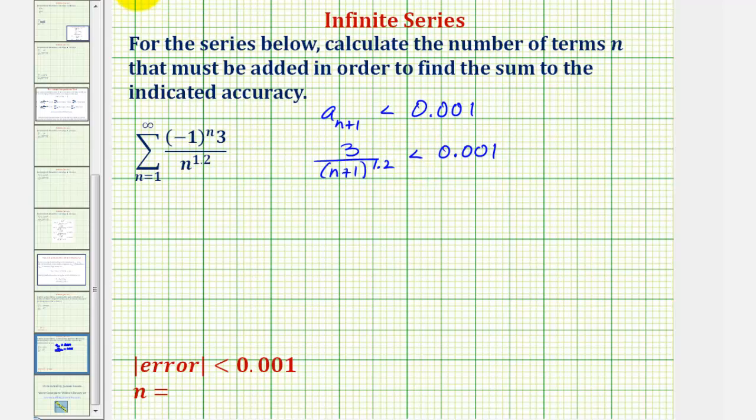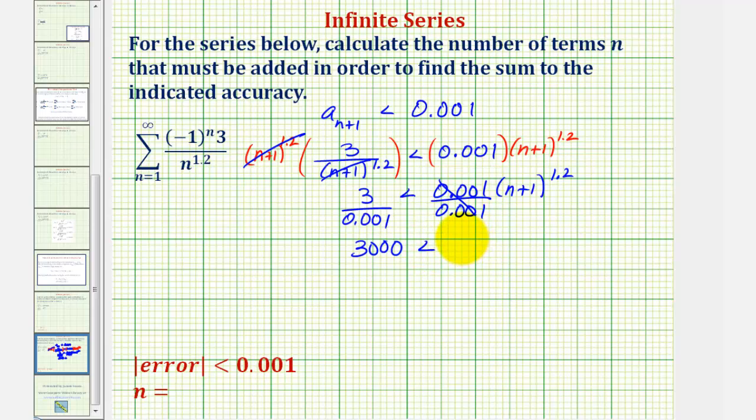So to solve this, let's begin by multiplying both sides by the quantity n plus 1 to the 1.2 power to clear the fractions. Notice this simplifies to 1. So now we have 3 is less than 0.001 times the quantity n plus 1 to the 1.2. Let's divide both sides by the decimal.